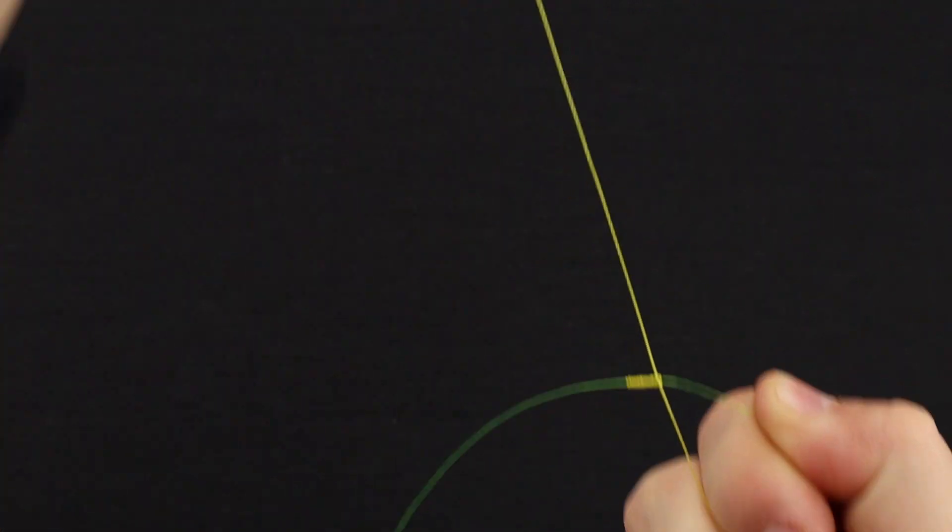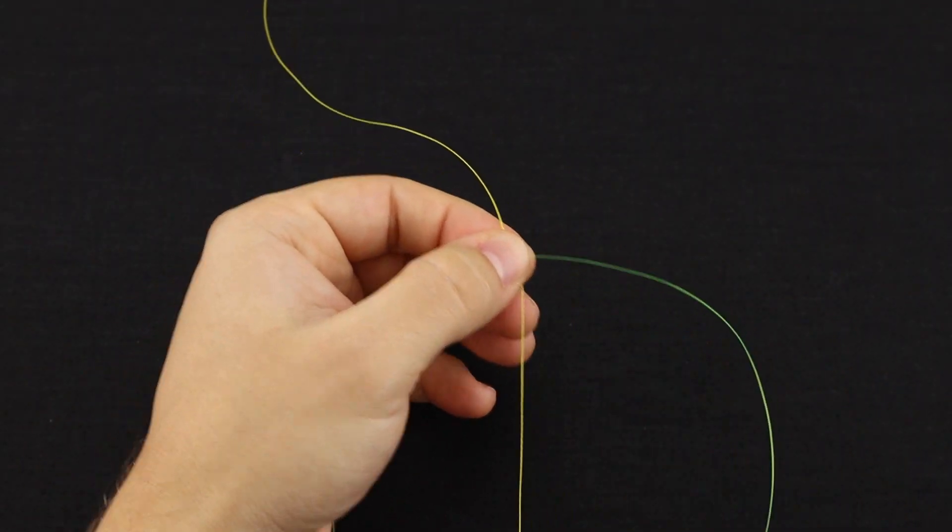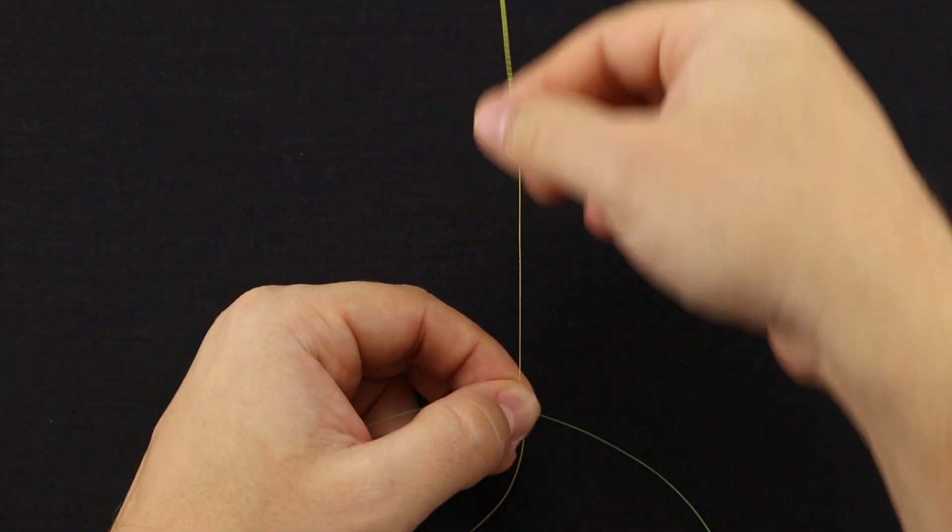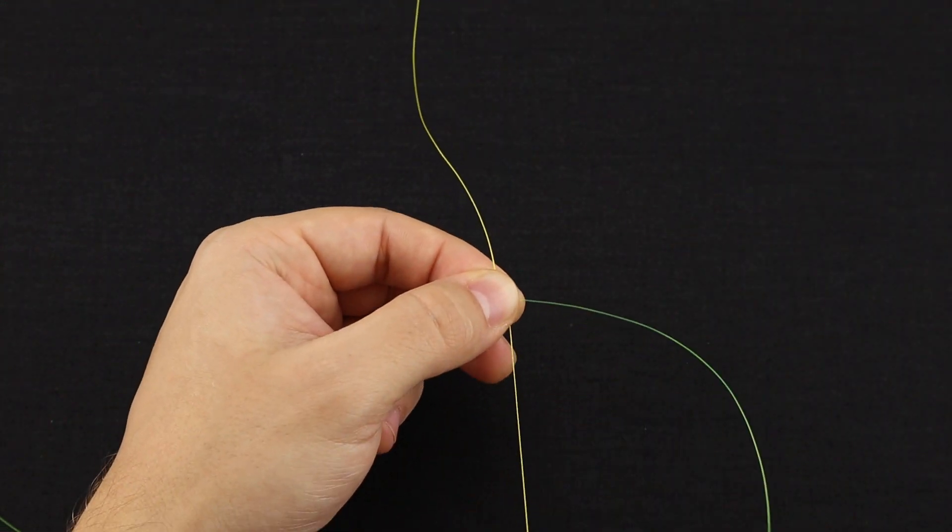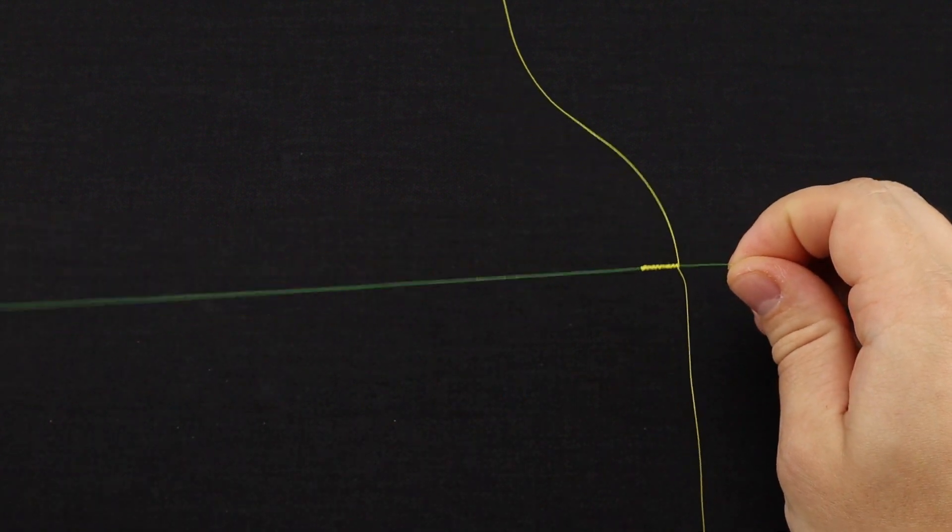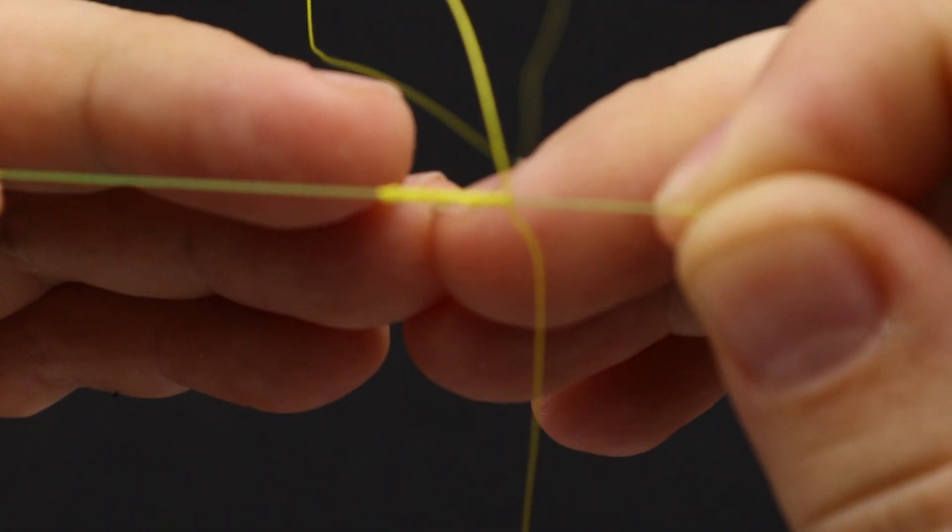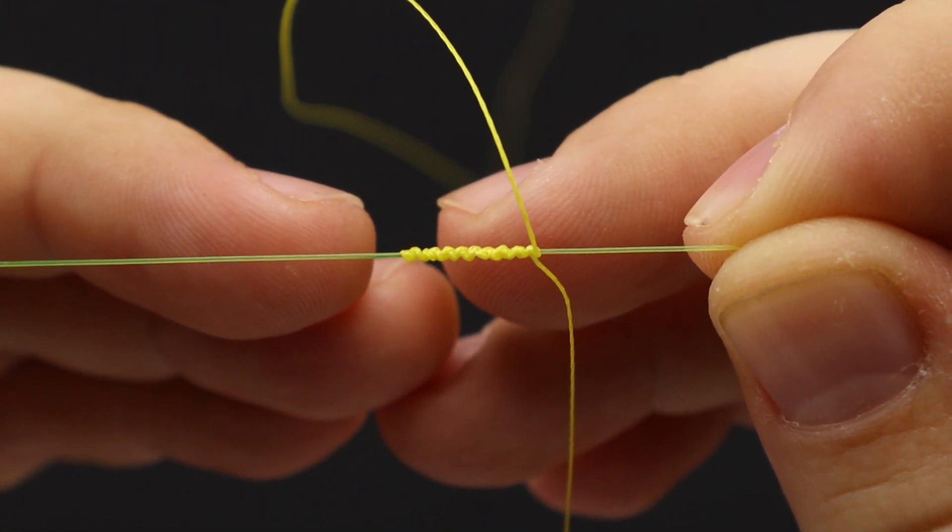All right. So you should actually be left with something that looks similar to the beginning of your knot with your braid main going up, braid tag, your mono tag, and your mono main going left. You have the first set of the FG knot started here.